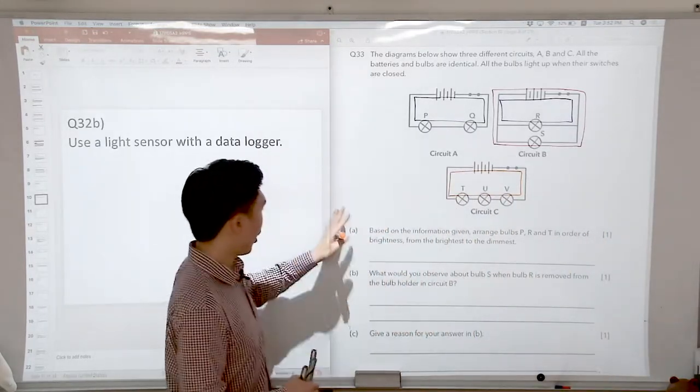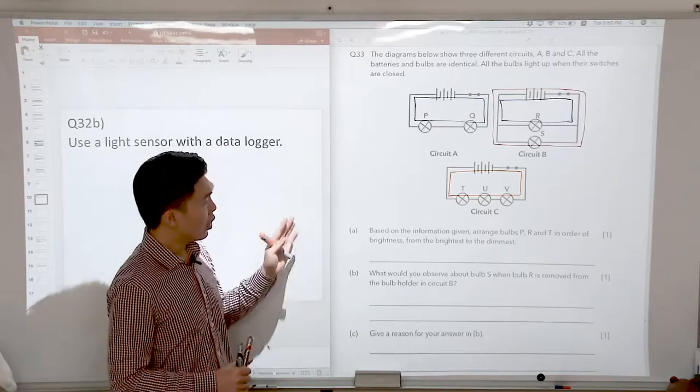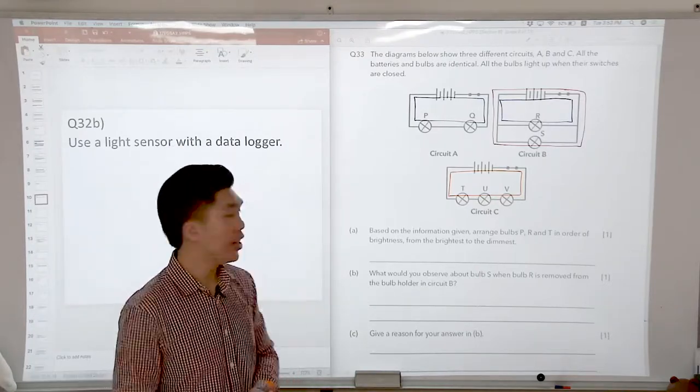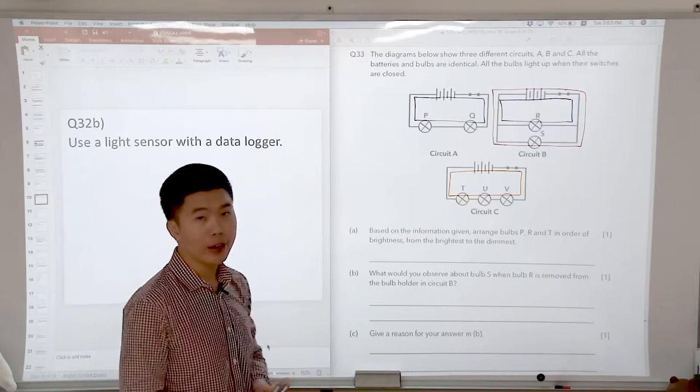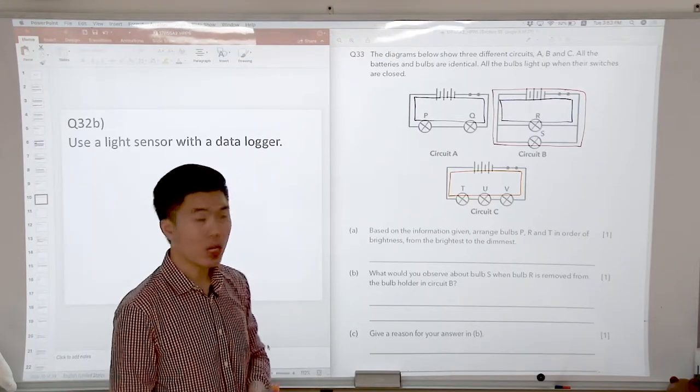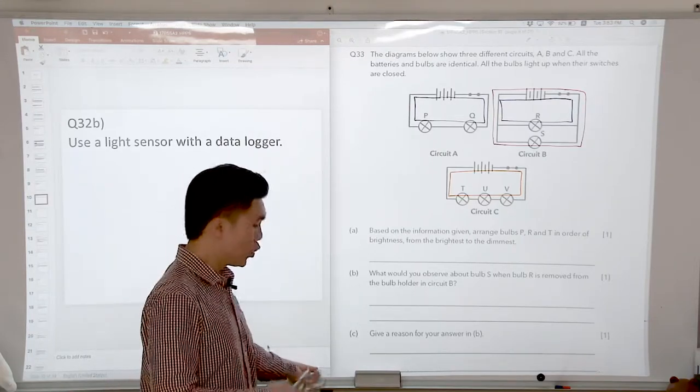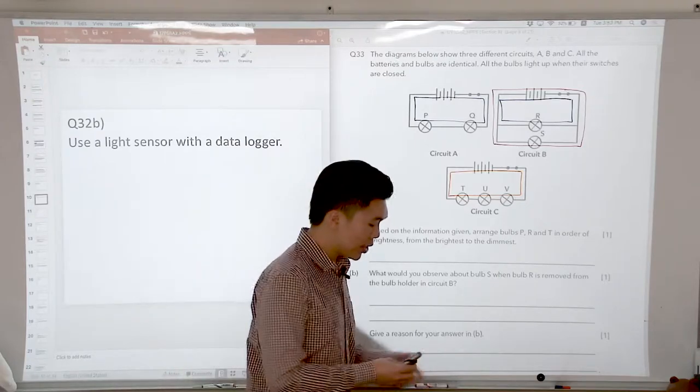Let's go on to part A of our question. Based on the information given, arrange the bulbs P, R and T in order of brightness from the brightest to the dimmers. How are we going to do that? Now I want you think of this analogy.